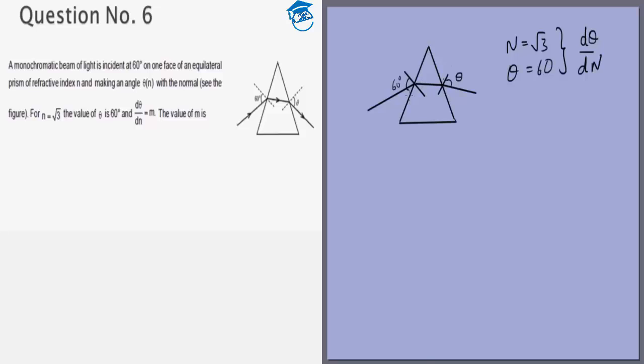First of all the most important thing to realize is if this angle is 60 then this angle is 30. If this angle is 60 and n equals root 3 so this angle r we can say sin 60 times 1 equals root 3 times sin r.